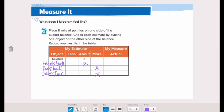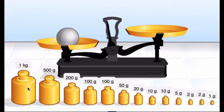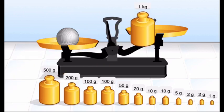We will measure each object and see whether it's less than, about, or more than one kilogram. Let's put one kilogram on one side of the scale and the tennis ball on the other side.